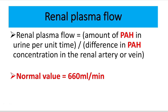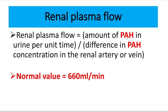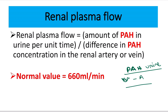First of all, what is the renal plasma flow? Renal plasma flow is measured by para-aminohippuric acid (PAH). It is measured by the amount of para-aminohippuric acid per unit time, divided by the difference in para-aminohippuric acid concentration in the renal arteries and veins. So the equation is: PAH in urine divided by the difference of PAH in artery and vein.